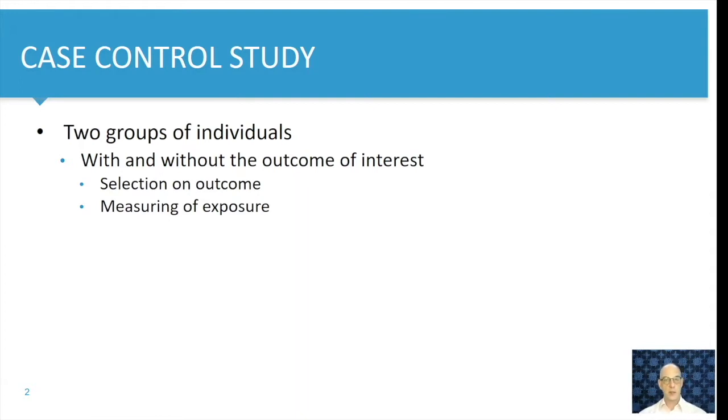This is especially true in circumstances where the disease of interest or the outcome of interest is rare. In any case control study we have two groups of individuals, those with the outcome and those without the outcome of interest. So the selection is on outcome and then we assess the frequency of exposure.